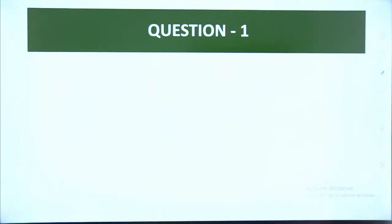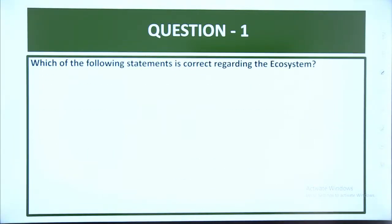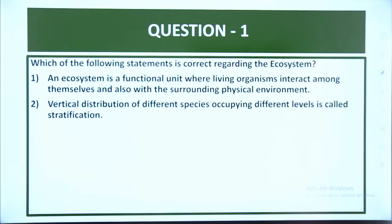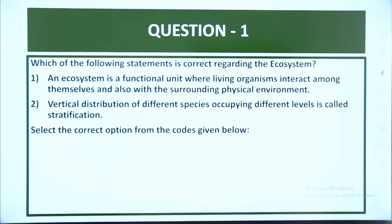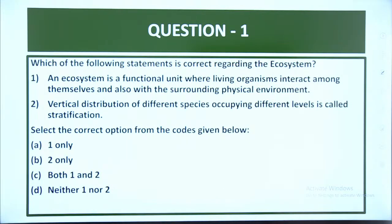Question number one. Which of the following statements is correct regarding the ecosystem? First statement: an ecosystem is a functional unit where living organisms interact among themselves and also with the surrounding physical environment. Second: vertical distribution of different species occupying different levels is called stratification. A: one only. B: two only. C: both one and two. D: neither one nor two.